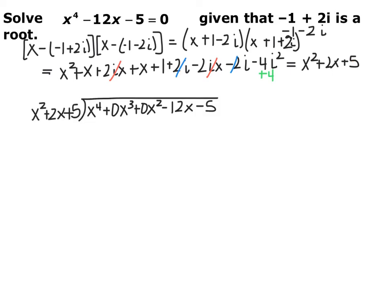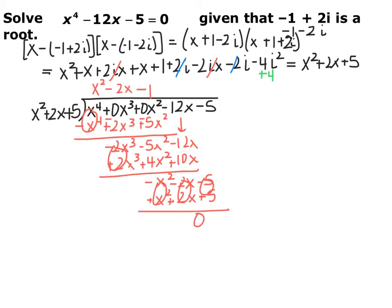Now we divide the original function by this new quadratic. This will give us another quadratic whose zeros we can find. Note that we must use polynomial long division — not synthetic — because the divisor is quadratic, not linear. The original function also needs placeholder terms for x cubed and x squared. Pause the video and do this polynomial division. When you finish, you end up with x squared minus 2x minus 1.